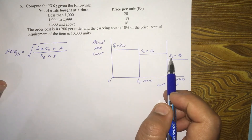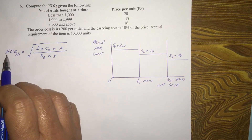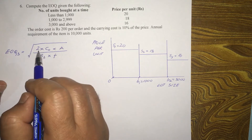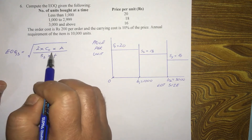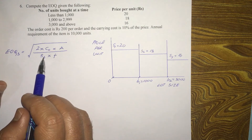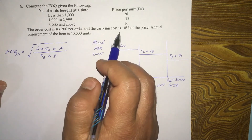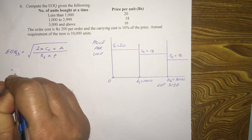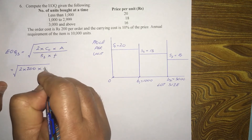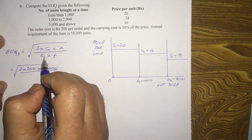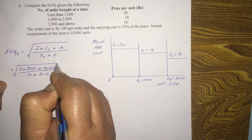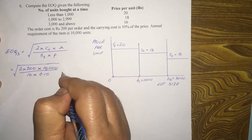First, we need to find EOQ3 using price S3. The formula is: EOQ3 = square root of (2 × CO × A) divided by (S3 × F). Substituting: CO is 200, A is 10,000, S3 is 16, and F (carrying cost) is 0.1. Solving this gives 1,581.14 units.